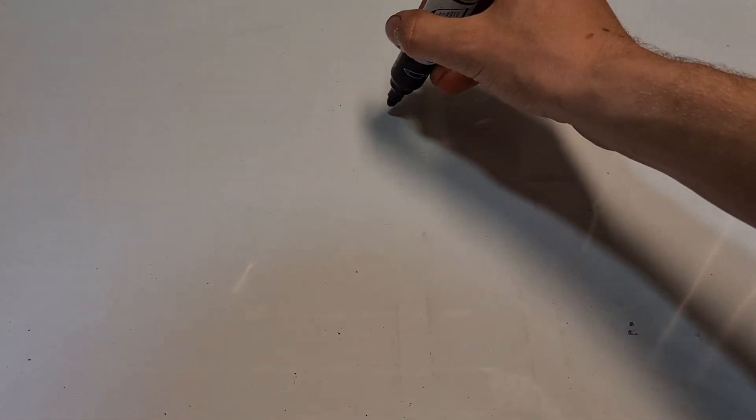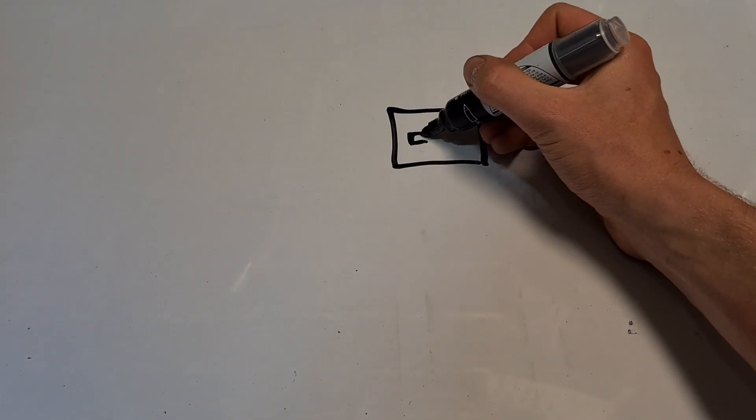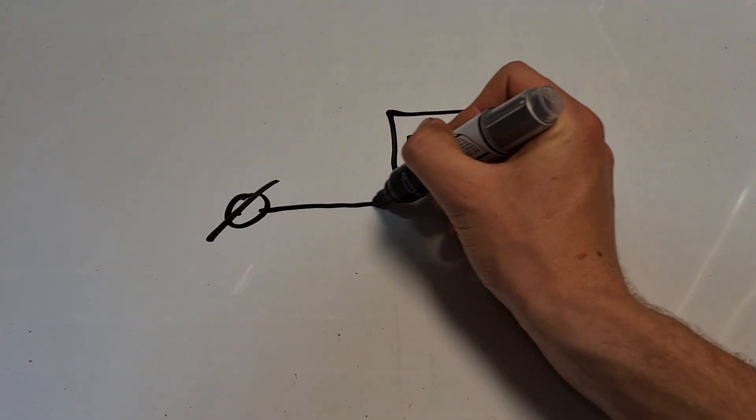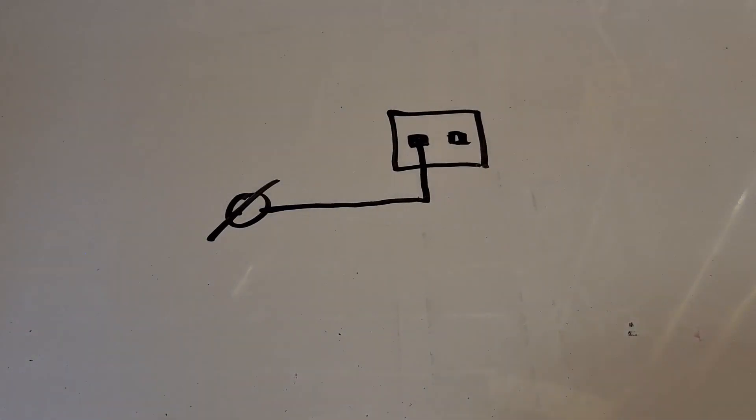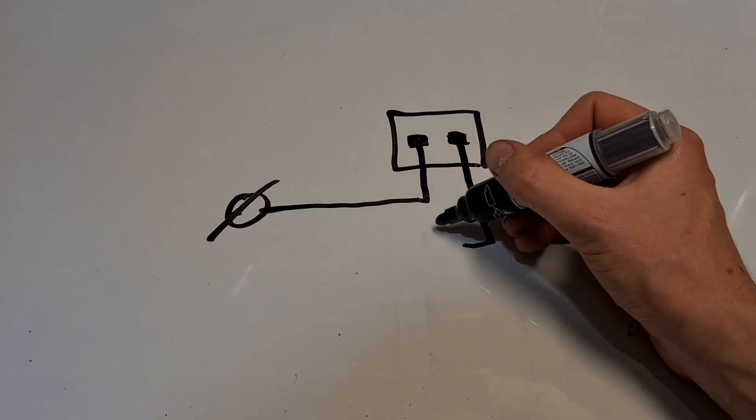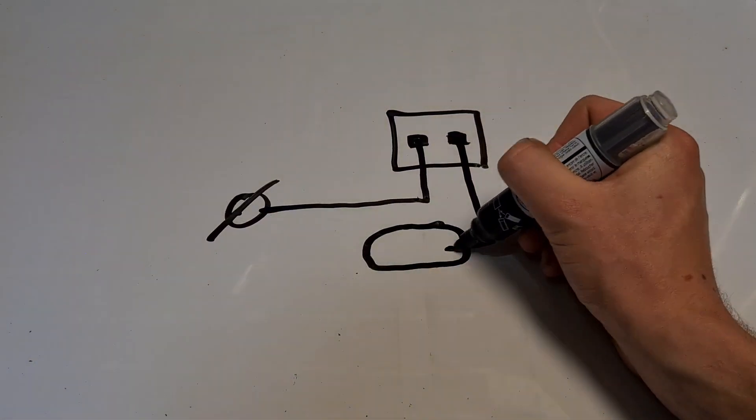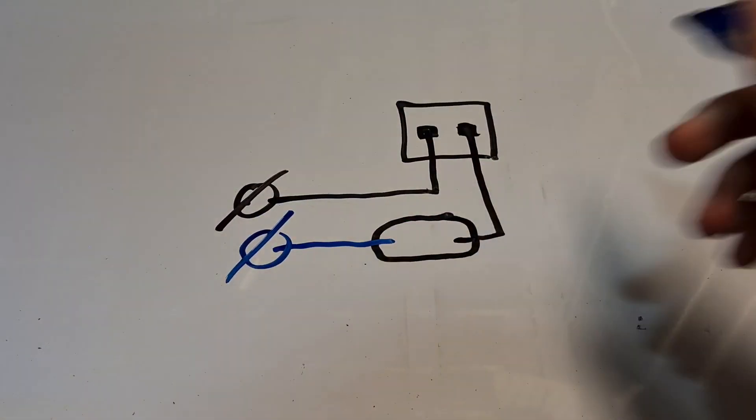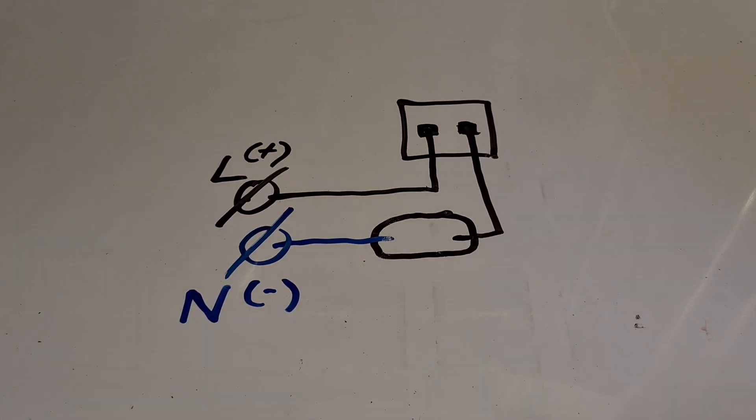So what we see is the ballast. Of course, we have two points to connect it: a cable going to the ballast and a cable going to the bulb. This is the little drawing that you see here, and as you can see, it's not that complicated.